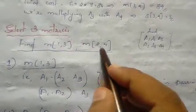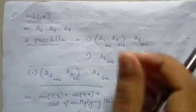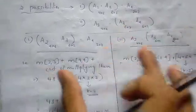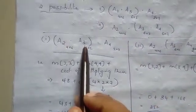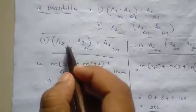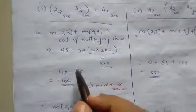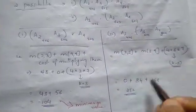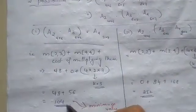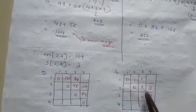Next is M24, the 3-matrix case A2, A3, A4 with 2 possibilities. Either M23 plus M44 plus cost of multiplying, that is 4 into 2 into 7, giving 104. Or the second possibility gives 252. So the minimum value is 104. M24 is 104 and S24 is 3.